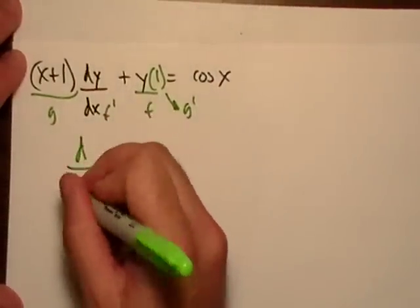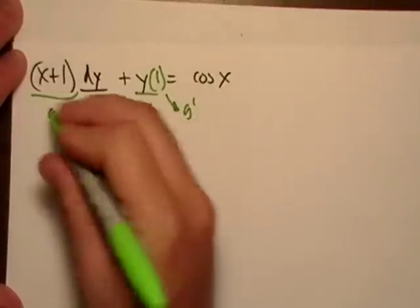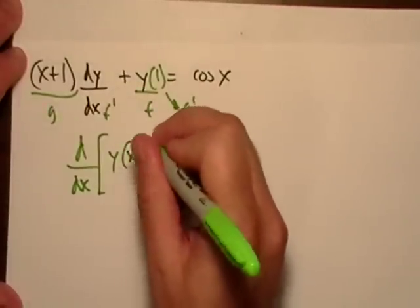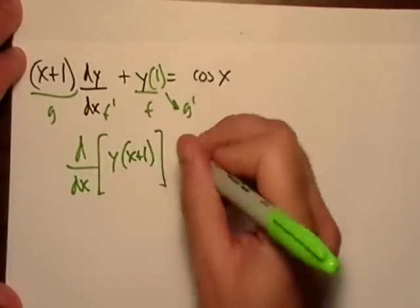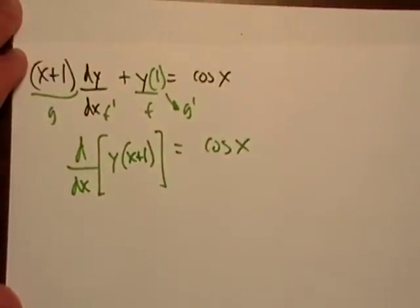So I could just go ahead and do this. This is just the same thing we've been doing. The derivative of y times x plus one, and that's equal to cosine x.